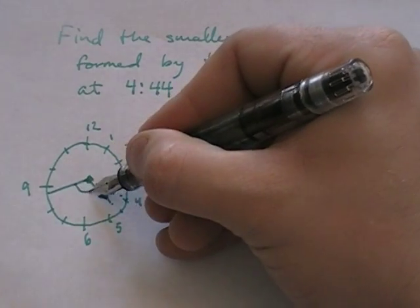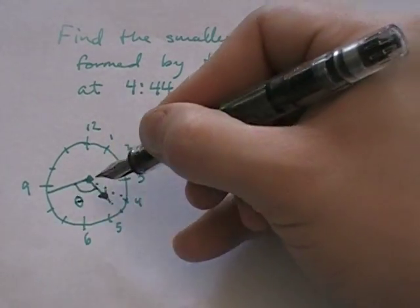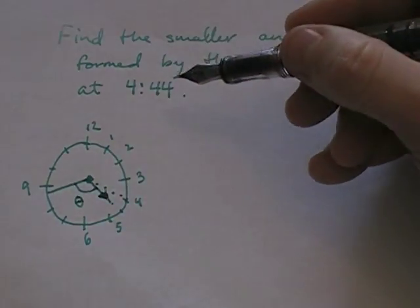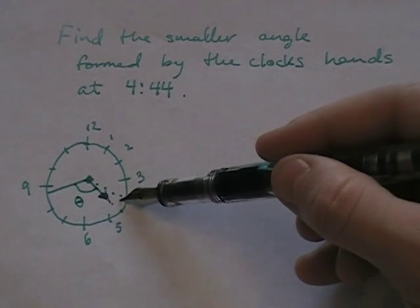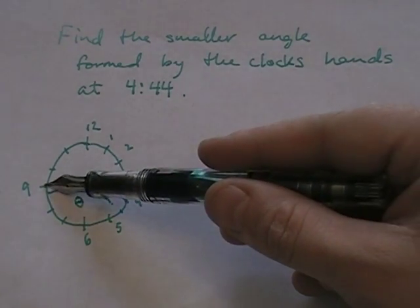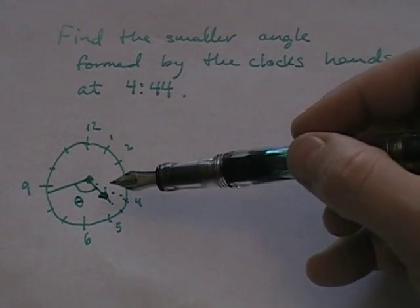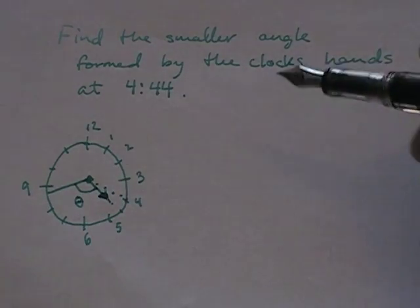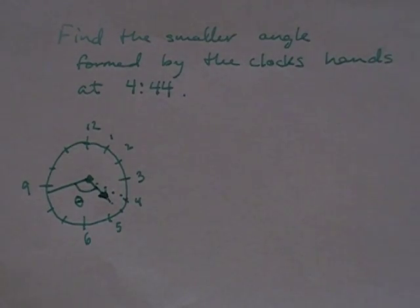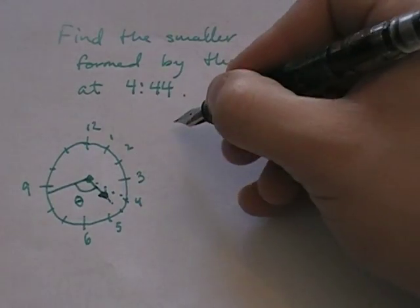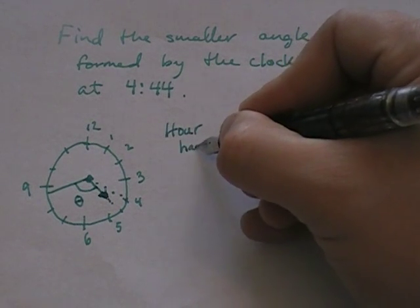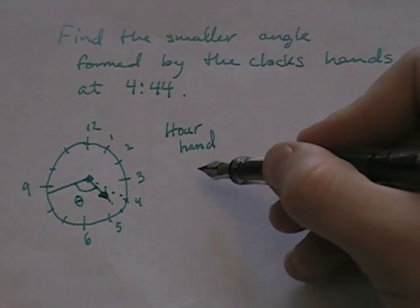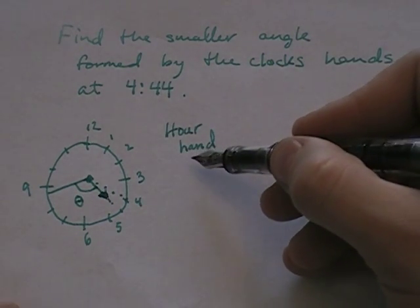What we're looking for is the angle between these two hands. The common mistake is saying this one points at 4 and this one points at basically the 9, and just giving that angle. We have to be more careful and look at our hour hand properly.